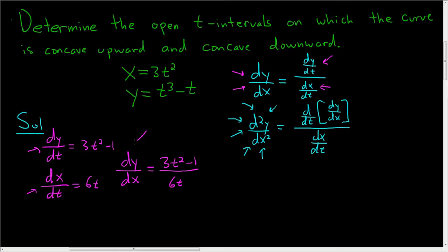Now at some point, we have to take the derivative of dy/dx with respect to t, right? That's what it says to do here. So it's a good idea to maybe rewrite this as 3t squared over 6t minus 1 over 6t. And this can be simplified further. This is actually just t/2 minus 1/6 t to the negative 1.